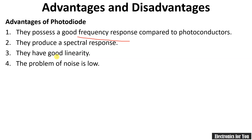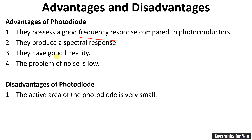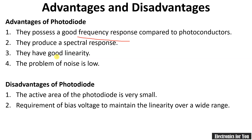The disadvantages are: the active area of the photodiode is very small — the area where light falls is minute in size. Also, a bias voltage is required to maintain linearity over a wide range.